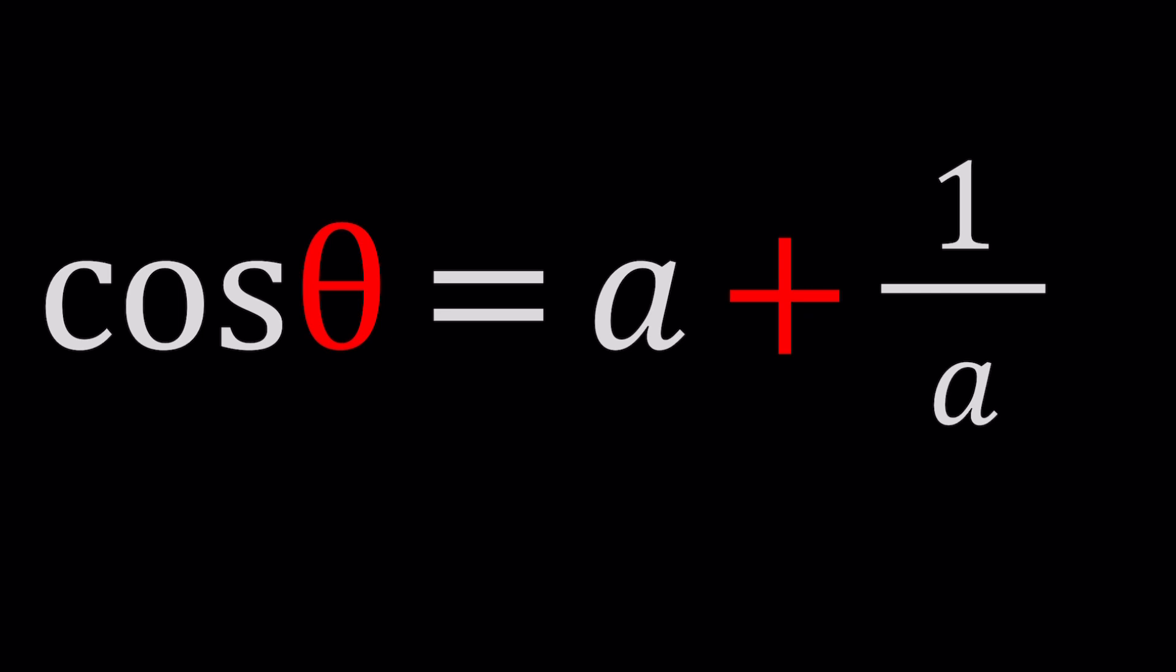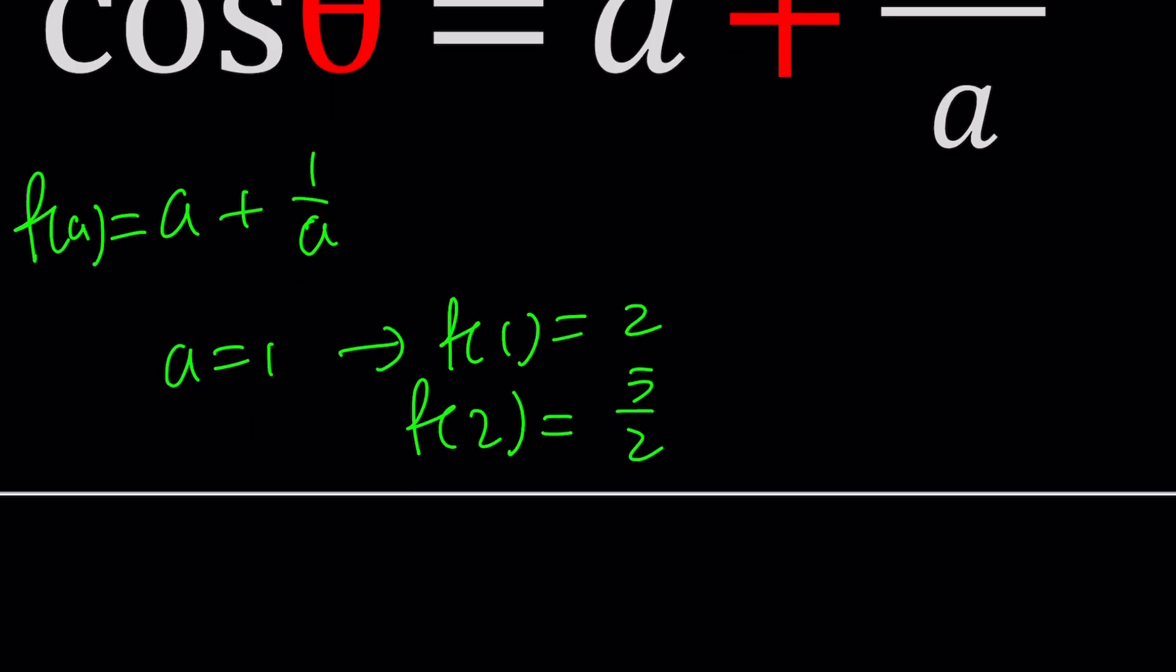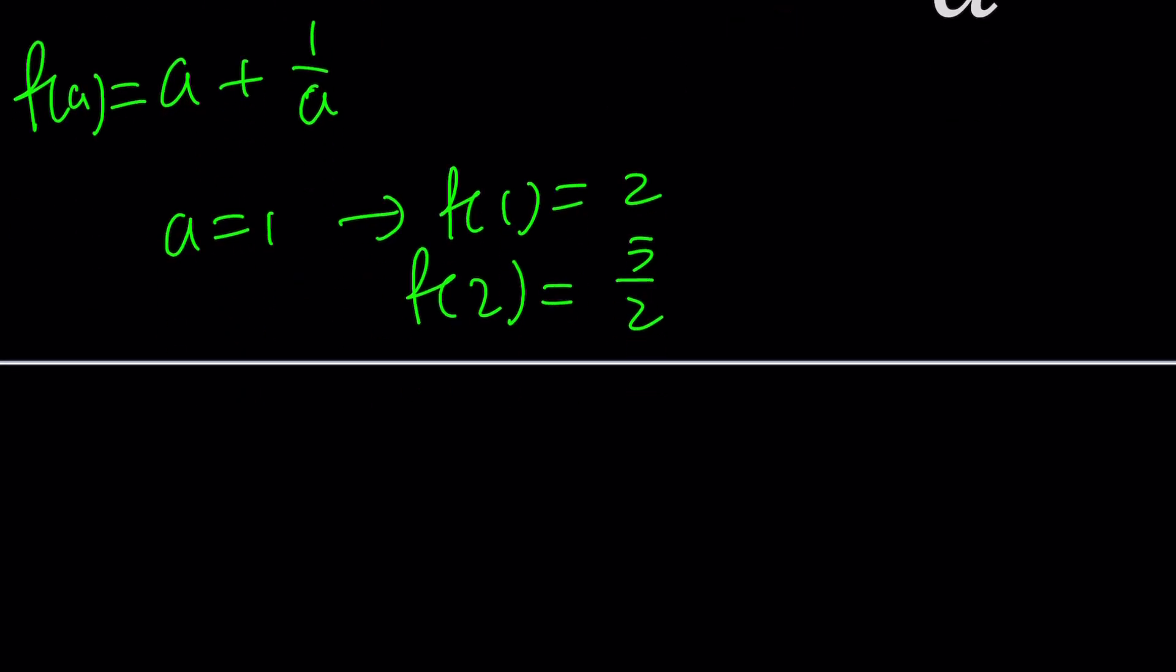A plus 1 over A, if you think about it and look at different values. Let's experiment. What if A equals 1? Then this becomes, let's call this f of A, it becomes f of 1 equals 2. What is f of 2? It's 2 plus 1 half which is 5 halves. What is f of 0? Undefined. What is f of 1 half?